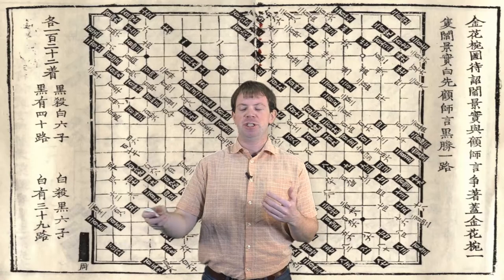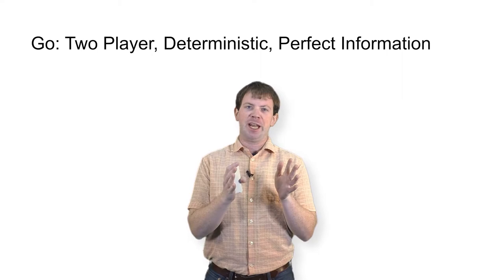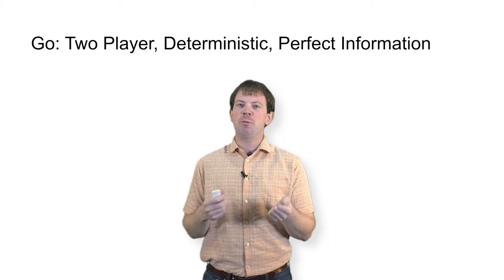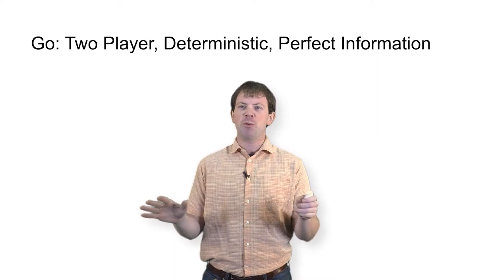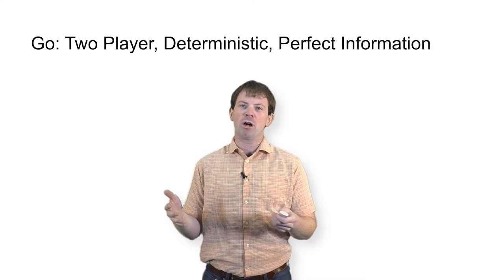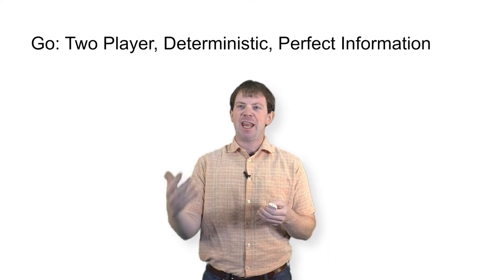Go is a two-player game, and it's also deterministic, which means there's no randomness. In something like poker, you don't know what card you're going to draw, whereas in Go you play a move and that's that. It's also a game of perfect information, which means both players know everything that's going on — unlike a game with a fog of war where you might have pieces but don't know where your opponent's pieces are. Everyone knows everything, which makes it a very nice system for machine learning because we don't have any hidden information.